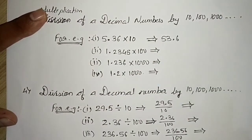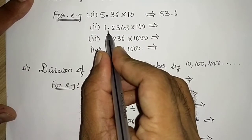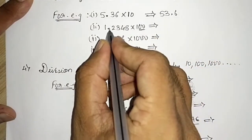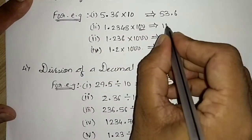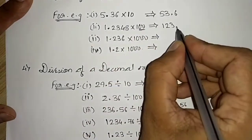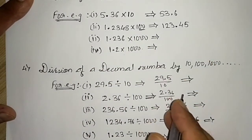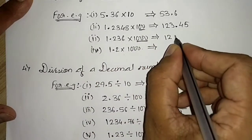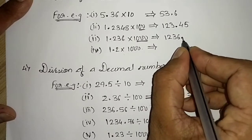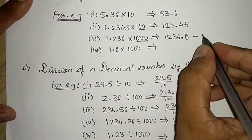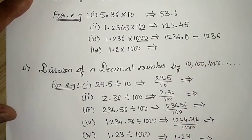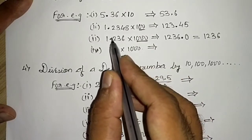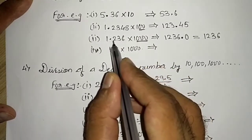For 1.2345 × 100: there are two zeros in 100, so shift the decimal point two places to the right — you get 123.45. Similarly, multiplying by 1000 means three zeros, so shift three places: 1.2346 becomes 1236.0, which is just 1236.